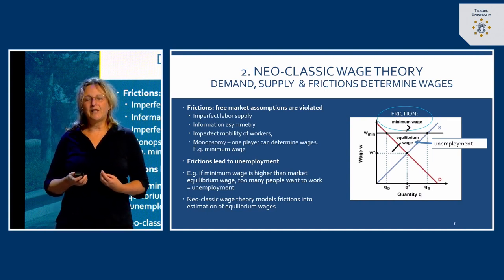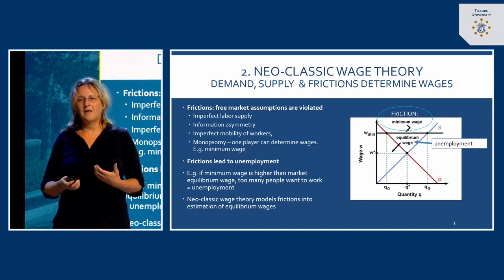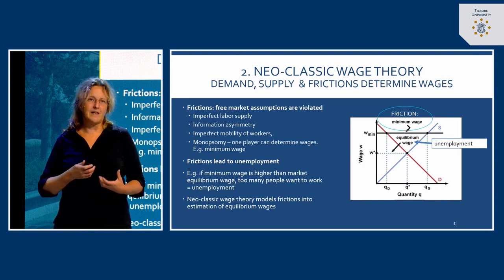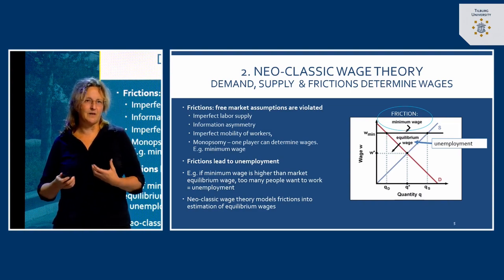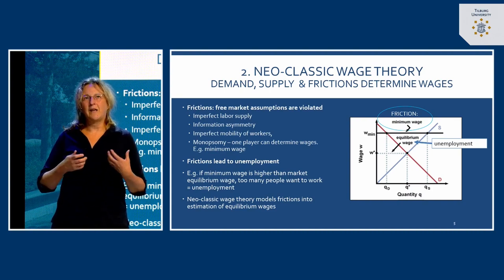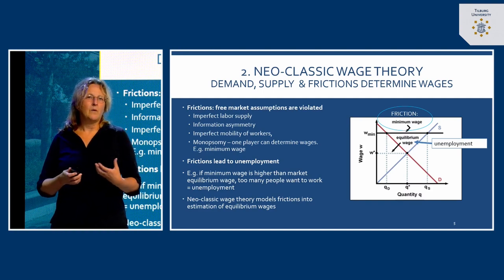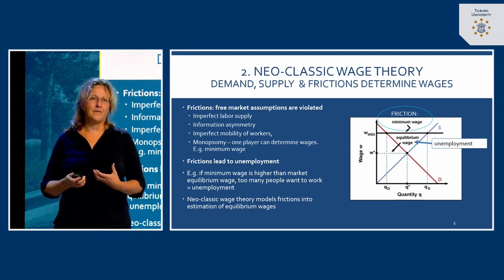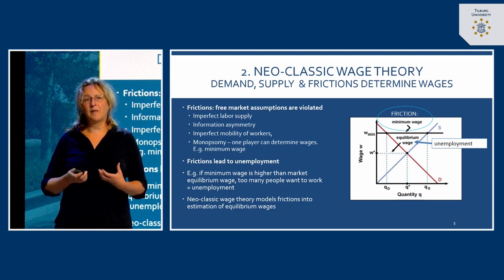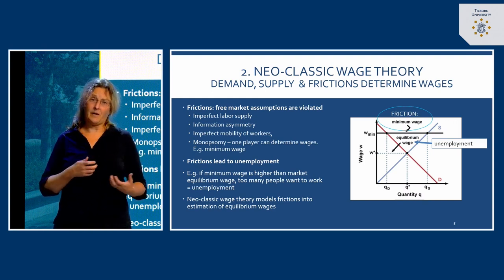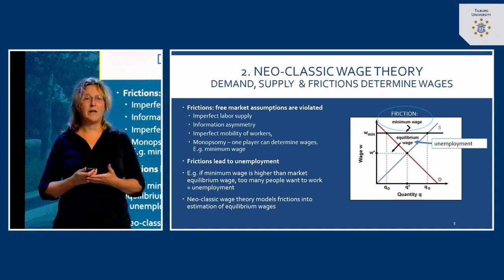Also, there's an information asymmetry. Asymmetry means the different parties — employers and employees — have different information about the actual state of labor demand and supply. An individual employee has great difficulty determining what all other organizations are paying. So what is a fair wage for the job they're interested in? This information asymmetry leads to people either accepting too low wages or organizations offering too high wages.